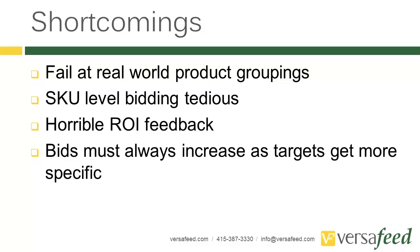So what are some of the problems with this? The first problem is that it really fails at real-world product groupings. For example, if you're selling sandals, you'll want to differentiate between a $10 sandal and a custom leather $150 sandal made in Italy. The second problem is that SKU-level bidding is really tedious — it's entered by hand and you typically don't get very good feedback. When you make vague groups, you can't really see how well individual products within those groups are doing. And lastly, bids must always increase, so it can be troublesome if you have products doing poorly that you'd want to bid just a penny on.